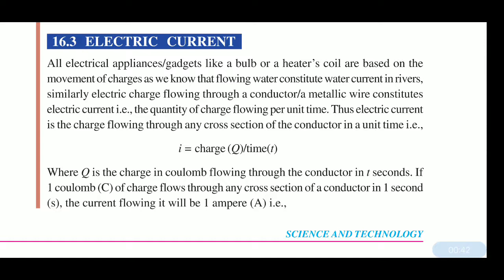In a conductor or a metal wire, electric charge flows and this is called electric current. The quantity of charge flowing per unit time through any cross-section of the conductor is electric current. I = Q/T, where Q is the charge in coulombs and T is the time in seconds.